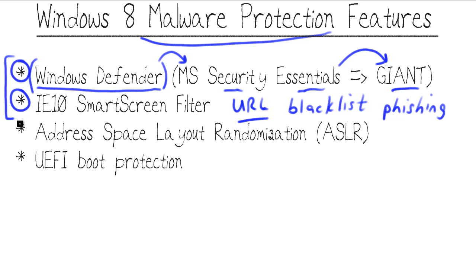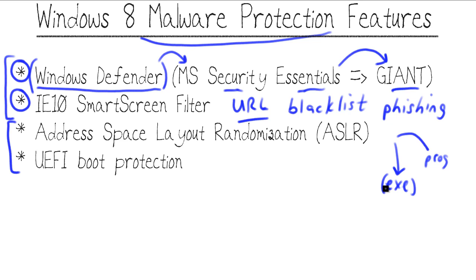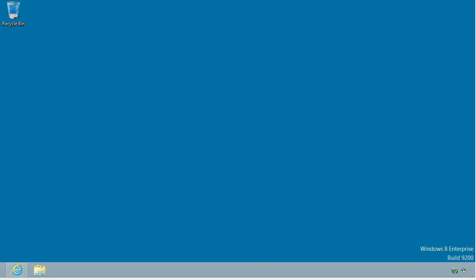Under the hood — stuff the ordinary user would never be aware of — we have Address Space Layout Randomization, or ASLR. What this does is periodically shift the memory location of executable code so that your programs are less likely to get tracked and compromised by malicious code. The other under-the-hood enhancement in Windows 8 is UEFI boot protection, where Windows can detect boot-time viruses by going deeply underneath the operating system to the Unified Extensible Firmware Interface, or UEFI level, during a cold or warm boot.